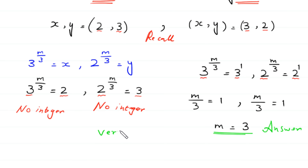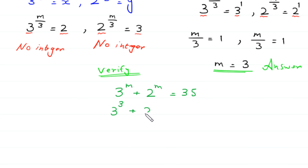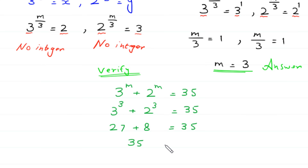Let us verify by substituting m = 3 into the original equation: 3³ + 2³ = 27 + 8 = 35. The left-hand side equals the right-hand side, confirming that m = 3 is correct.